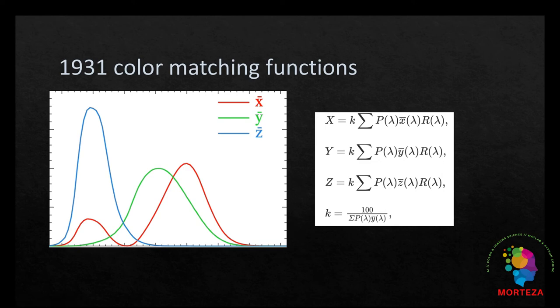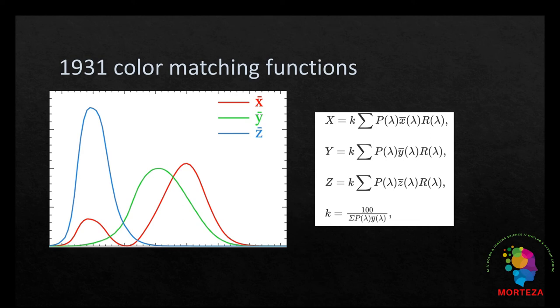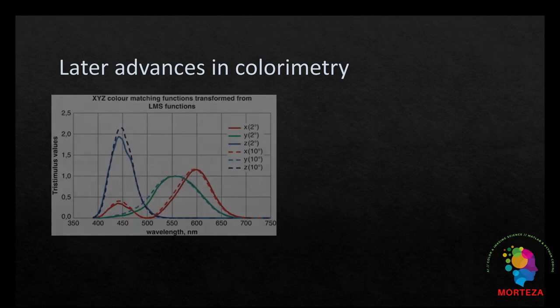So, these equations are the start of the colorimetry the way we know it nowadays. Later on, CIE came up with another set of color matching functions, as the set of 1931 was suitable for 2 degree visual field. But they needed another set of color matching function for a wider visual angle. So, they came up with 1964 CIE standard observer for wide visual angle colorimetric applications. They are shown here, 10 degree visual field.